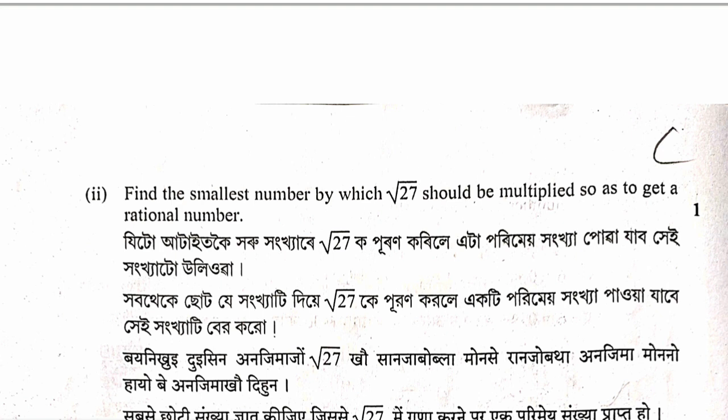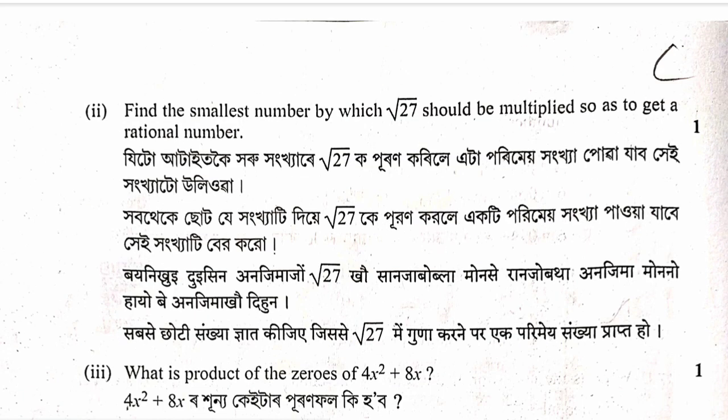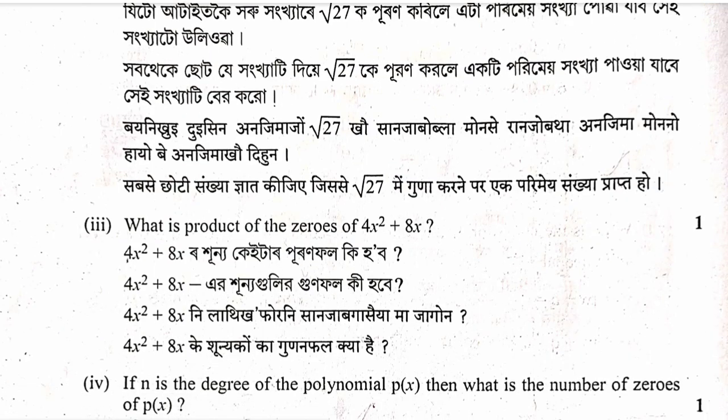Question: What is the product of the zeros of 4x squared plus 8x? Product of zeros equals c by a. Here c is the constant term, so the product of zeros is 0 by 4 equals 0.